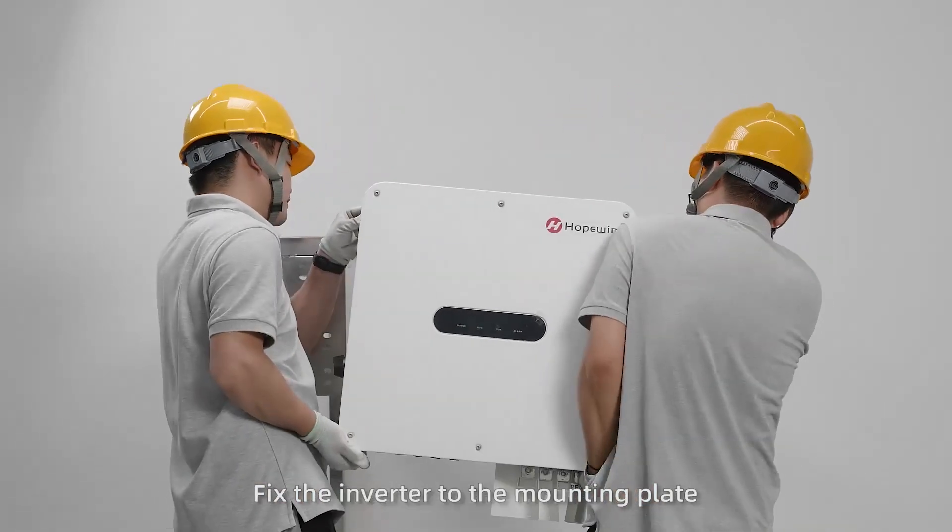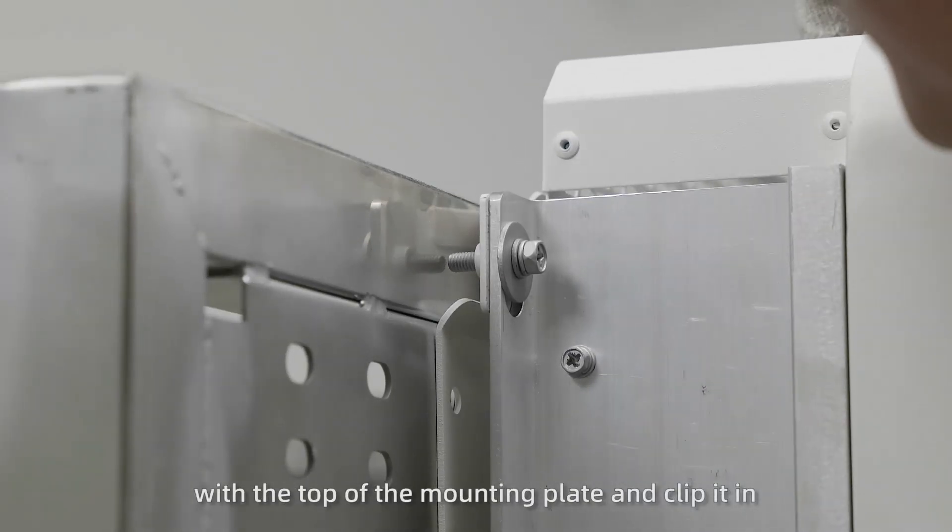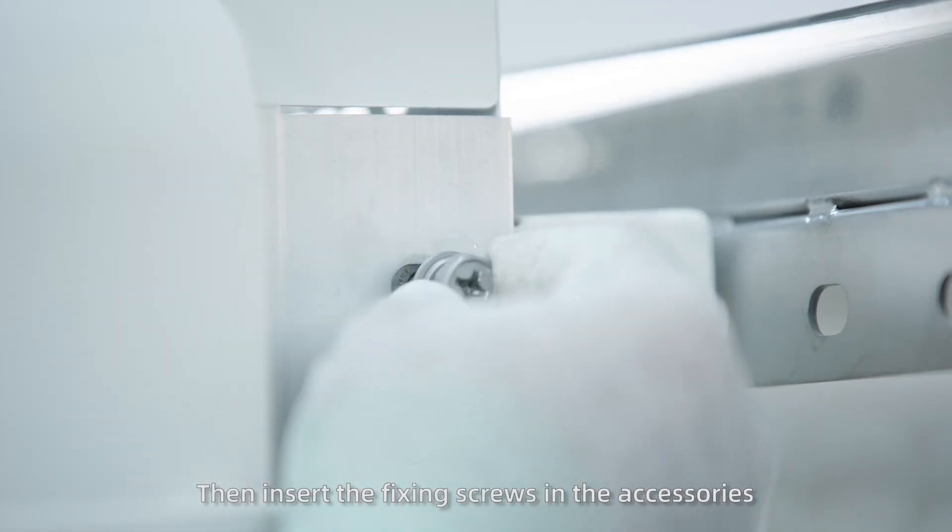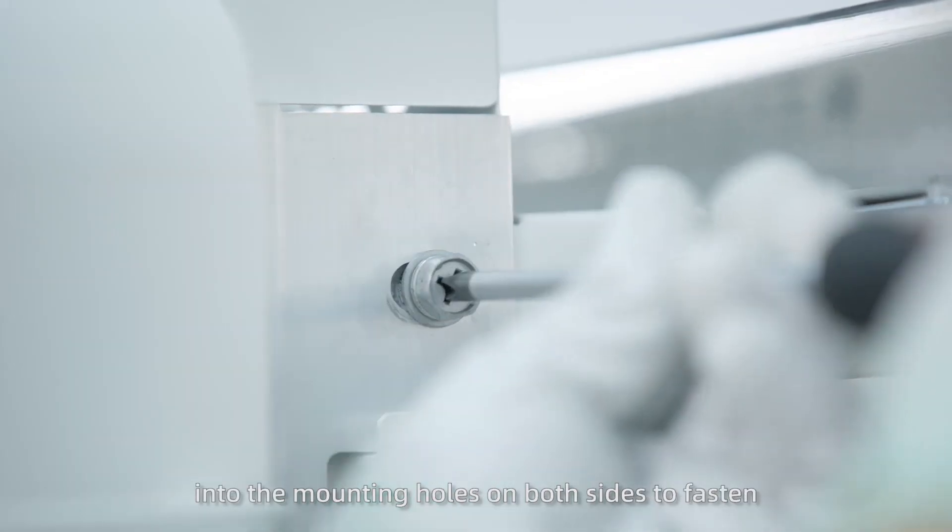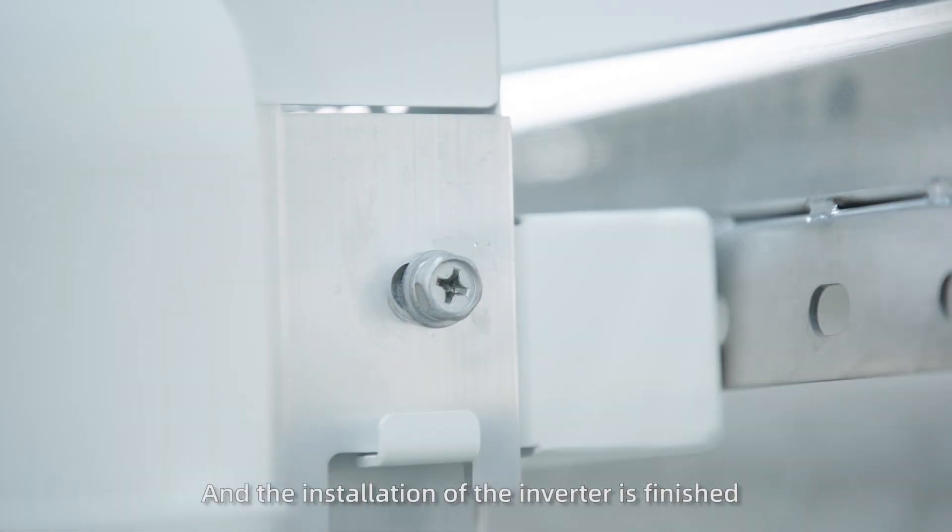Fix the inverter to the mounting plate. Align the gap at the back of the inverter with the top of the mounting plate and clip it in. Then insert the fixing screws in the accessories into the mounting holes on both sides to fasten. And the installation of the inverter is finished.